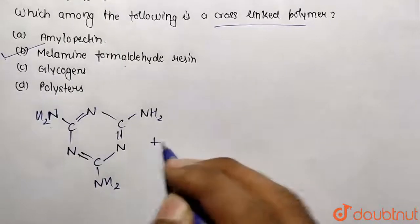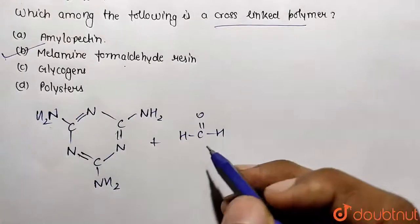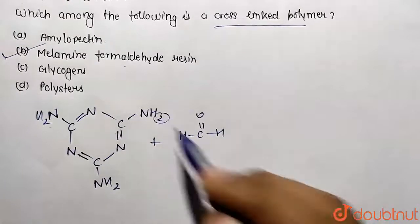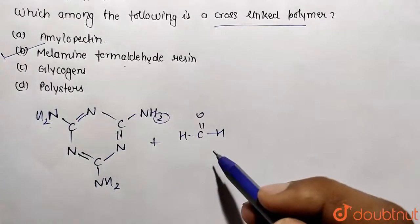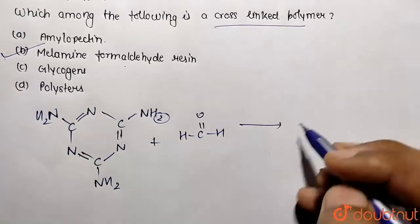Now we are going to take formaldehyde: H-C double bond O. So this is formaldehyde. Now what's going to happen? We are going to take H from this side and it's going to be removal or the direct addition will take place upon this place.